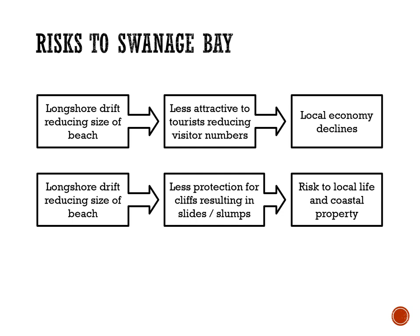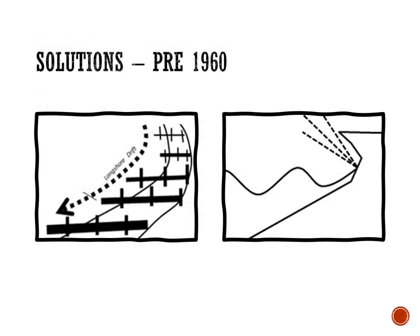Clearly Swanage Bay needs protecting, and it has needed protecting for a long time. The first solutions were put in place well over 100 years ago. Prior to 1960, from the 1800s through to 1960, these were groins — because longshore drift was removing the beach, trapping sediment means the beach absorbs wave energy and reduces erosion. So groins have been in place for over 100 years, along with a sea wall to reflect wave energy and protect the town when waves reached the beach.